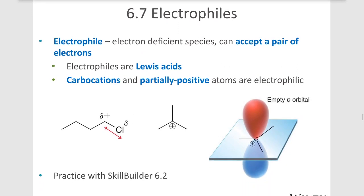What does an electrophile look like? It's an electron-deficient species that can accept a pair of electrons, making it a Lewis acid. Carbocations and partially positive atoms are electrophilic. In species A, a carbon has a chlorine attached — that chlorine withdraws electron density from the carbon, leaving the carbon with a partial positive and the chlorine with a partial negative, making that carbon electrophilic. In species B, there is a full positive charge on the carbon — that's called a carbocation — and that full positive charge makes that carbon electrophilic because it can accept a lone pair of electrons.